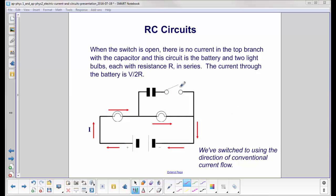Let's start with the switch open. There's no current in this branch. There's no complete path for current to flow. The current flows just as indicated by the red lines here around this loop. What's in the circuit? We have a battery and two light bulbs, each with resistance R.